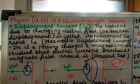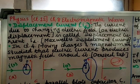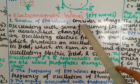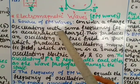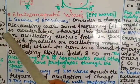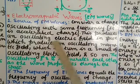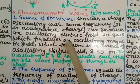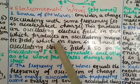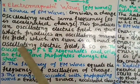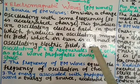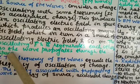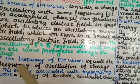Physics Class 12, Chapter 8: Electromagnetic Waves. Source of EM Waves — consider a charge oscillating with some frequency; it is an accelerated charge. This produces an oscillating electric field in space, which produces an oscillating magnetic field, which in turn is a source of oscillating electric field and so on. The oscillating electric and magnetic fields regenerate each other as the wave propagates through space.